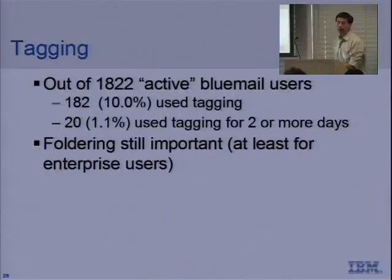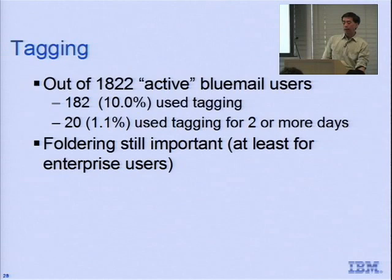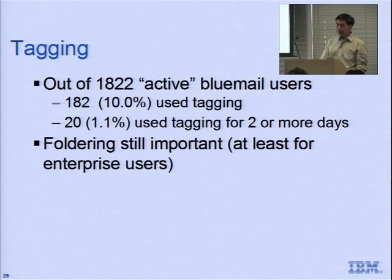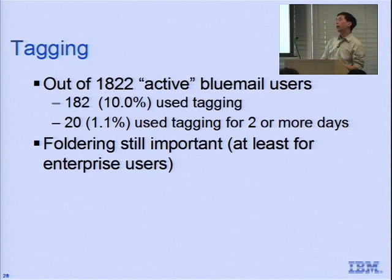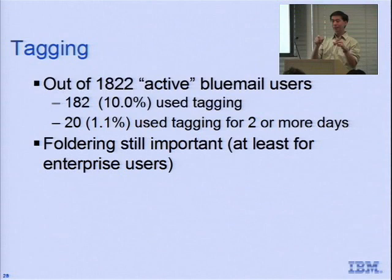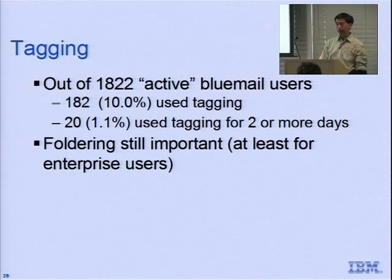Tagging, on the other hand, is much less adopted: out of 1,822 active BlueMail users, about 10% use tagging at all, and about 1% use tagging somewhat persistently. This says at least that foldering is important for our users. It also suggests we haven't highlighted or promoted tagging enough in the interface. We're seeding inboxes with a tagged message explaining how to use tagging, but we could do more in the interface. If you wanted to really promote tagging, maybe you shouldn't offer foldering, to change people's conceptual model.